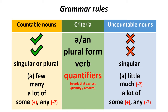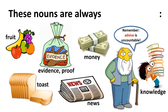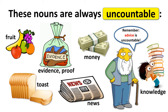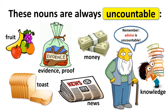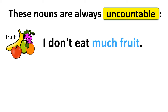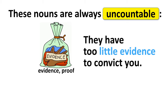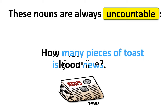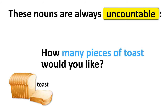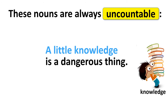Still, we need to talk about two more things. The first is tricky nouns — words that may be countable in your native language but are definitely uncountable in English: fruit, evidence, proof, money, advice, knowledge, news, toast. For example: 'I don't eat much fruit.' 'They have too little evidence to convict you.' 'No news is good news.' 'How many pieces of toast would you like?' 'A little knowledge is a dangerous thing.'